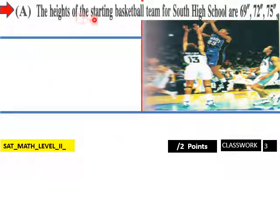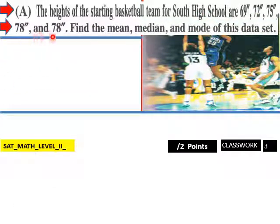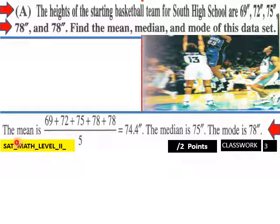A, the heights of the starting basketball team for South High School are 69, 72, 75, 78, and 78 inches. Find the mean, median, and mode of this data set. So here's our mean. We add up all our values, divide by five. We have five entries here, and this will equal 74.4 inches. The median is 75. Here's our median, and the mode would be 78. We got two 78 inch players.